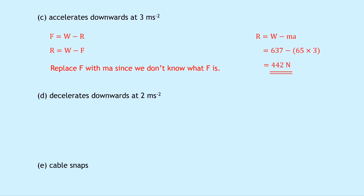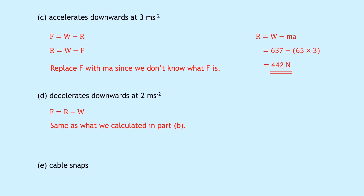Part D asks for the reading if the lift decelerates downwards at 2 m/s². Decelerating downward means slowing down while moving downward, so the unbalanced force is upward, meaning R is greater than W. This is the same form as part B, and since the acceleration magnitude is also 2 m/s², the answer is the same: R equals 767 newtons.